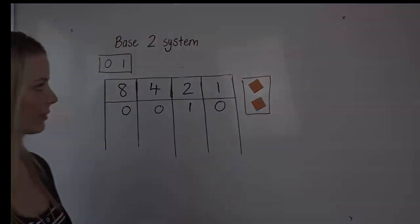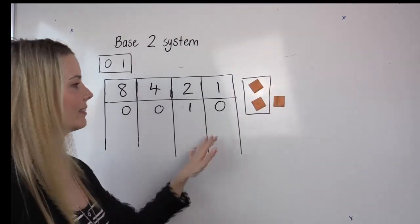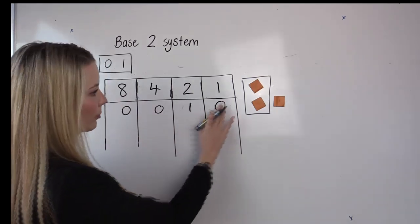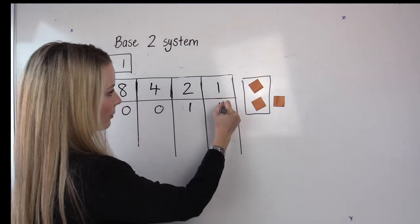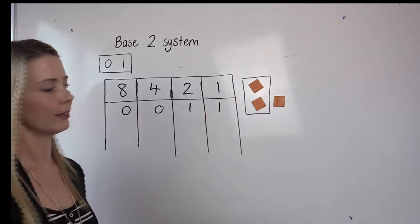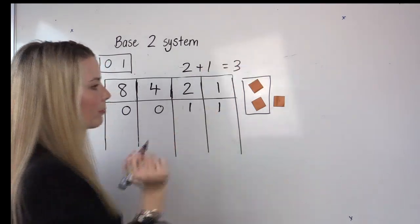Now if I add one more, I'm going to have three. And this indicates now that I need to change something and I'm going to change this to a one. Now I have three because the two plus the one equals three.